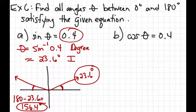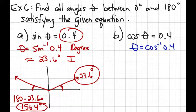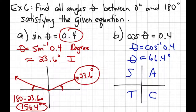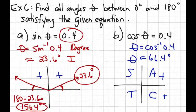For part B, find all angles between 0 and 180 satisfying cosine theta equals 0.4. Theta equals the inverse cosine of 0.4 — the calculator gives 66.4 degrees. Is there another angle with the same cosine value? Reminder: cosines are positive in the first and fourth quadrant, but they want angles between 0 and 180. There can't be an angle between 90 and 180 that gives a cosine of 0.4, because that would be negative 0.4. So this one has only one answer: 66.4 degrees.